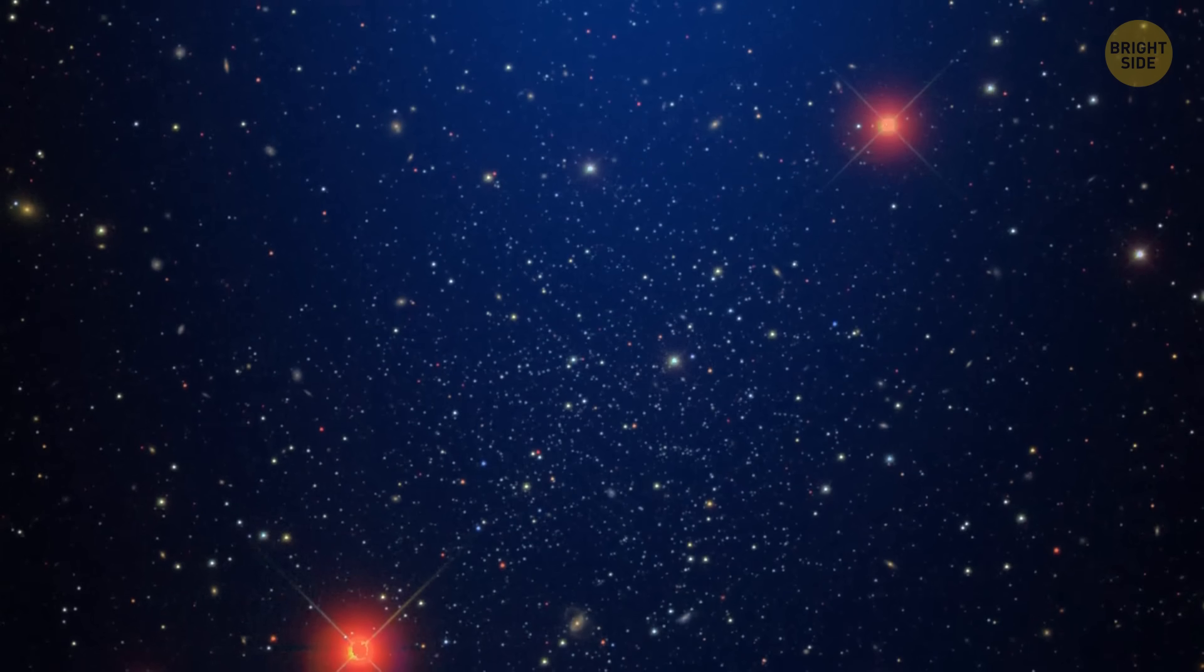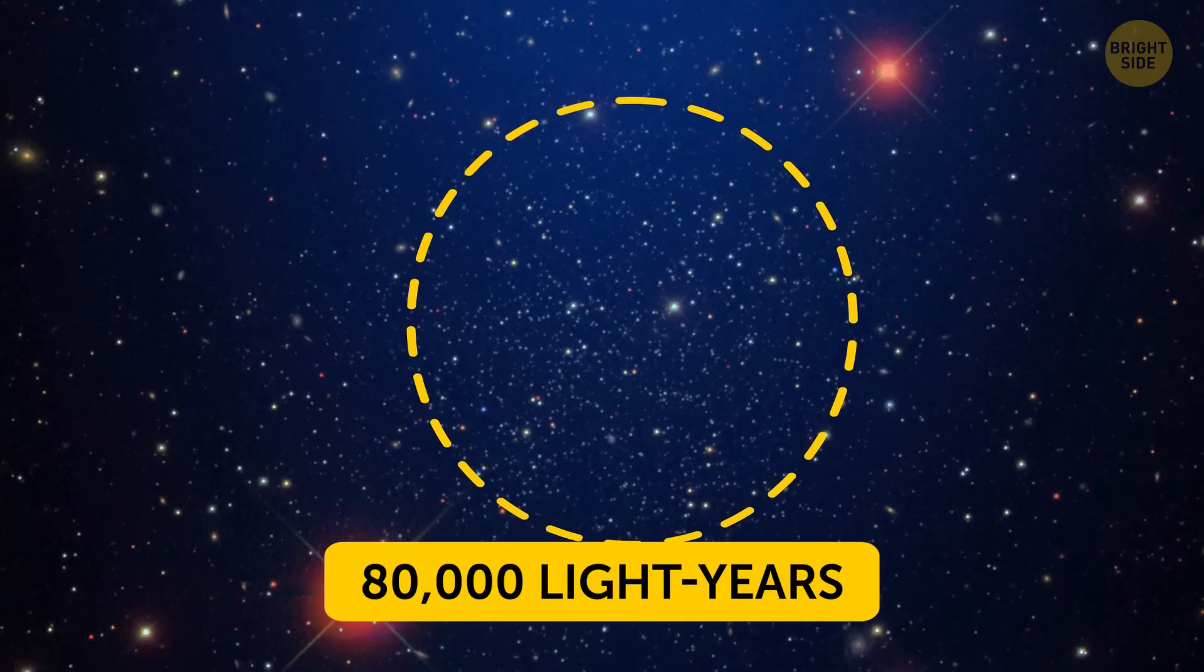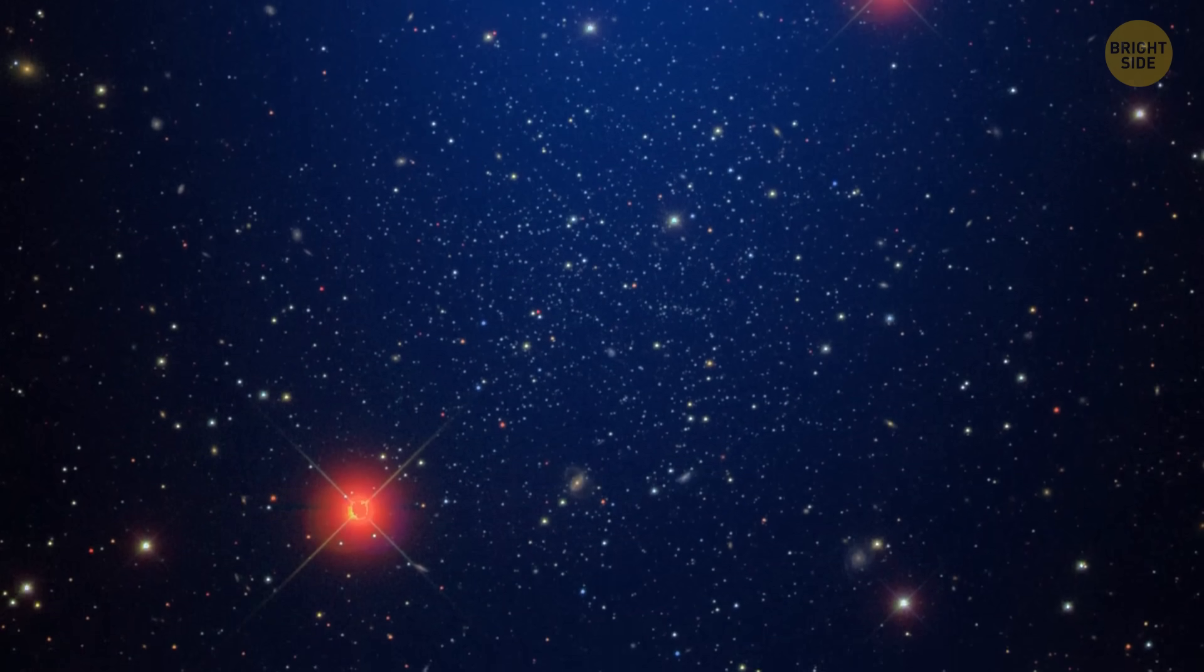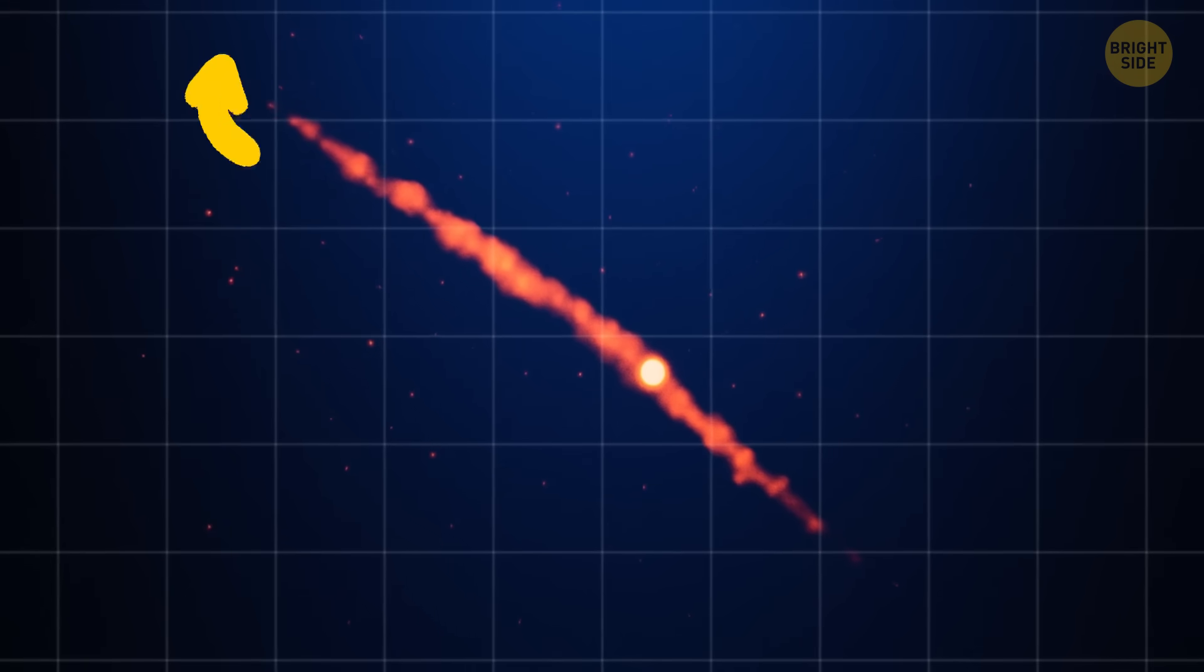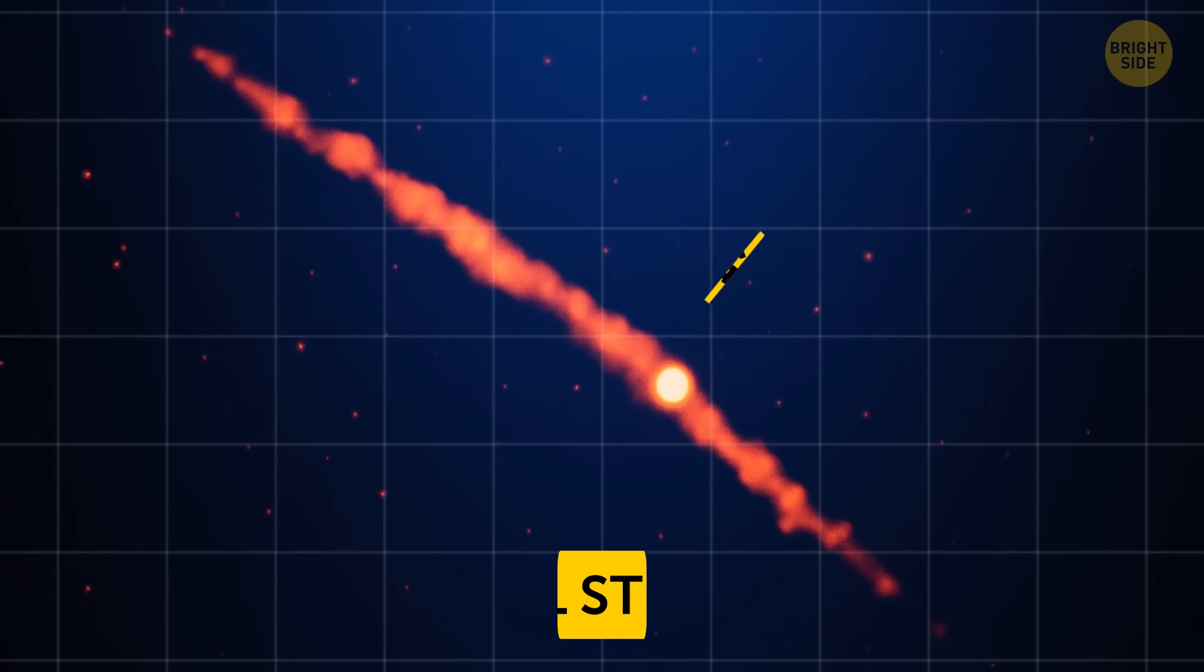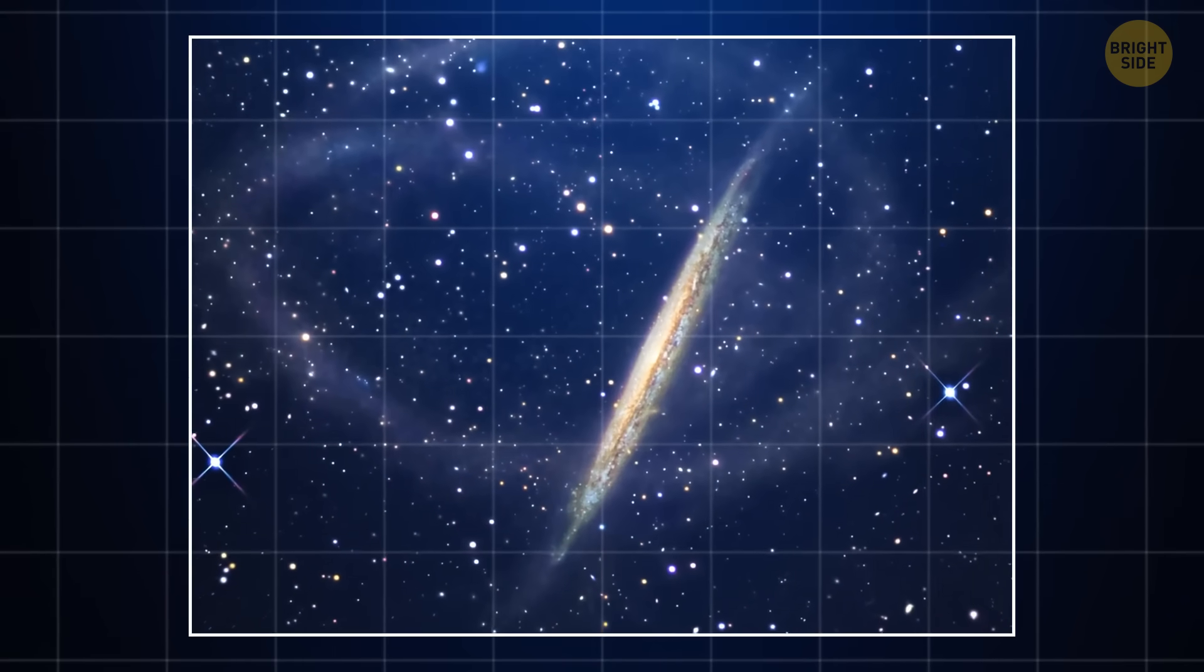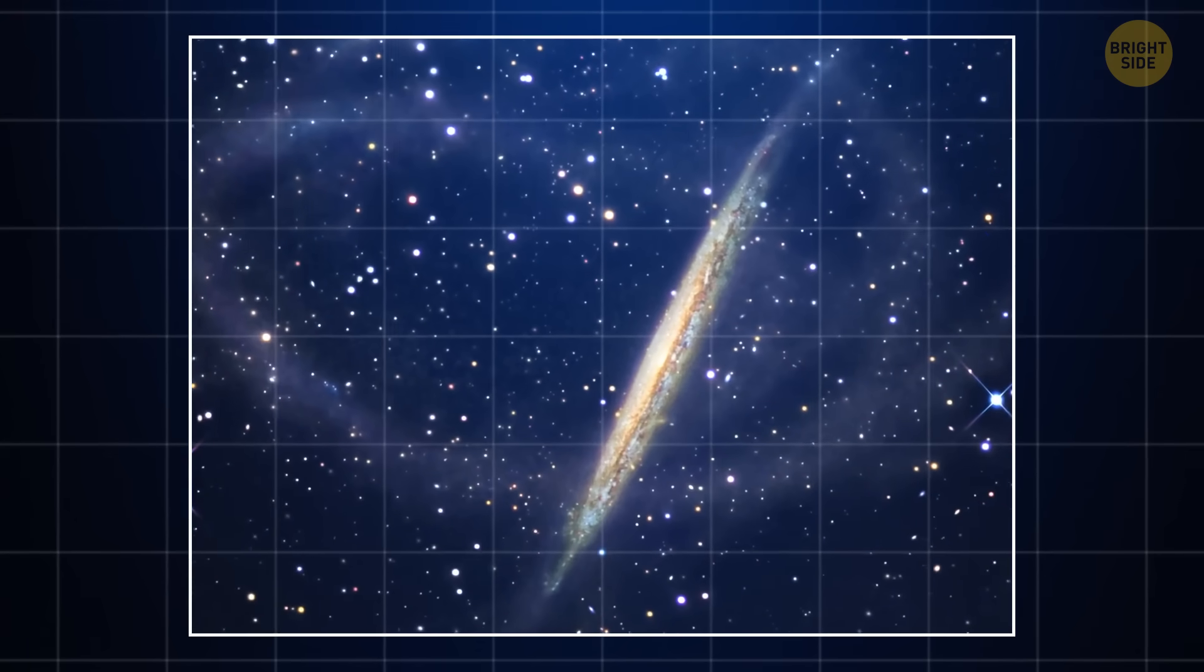Palomar 5 is a group of stars located about 80,000 light-years away from us. Normally, clusters like this are dense and tightly packed, with stars all bunched up together. But Palomar 5 is different. It's spread out and has a huge tail of stars, stretching across 30,000 light-years. This beautiful tail is called a tidal stream. It's like the stars are spilling out of the cluster, creating a long river of light. Tidal streams like this are rare and hard to study.